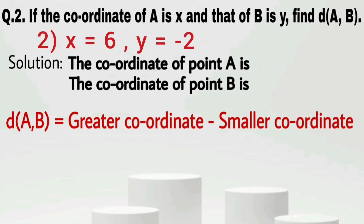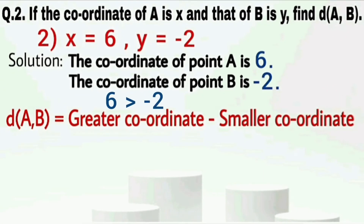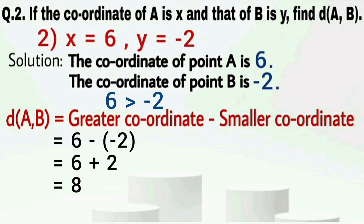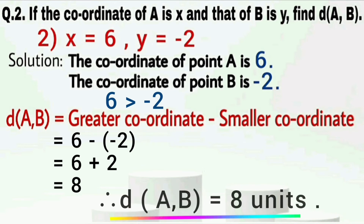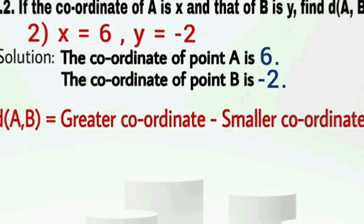The second case: X equals 6 and Y equals minus 2. The coordinate of point A is 6 and the coordinate of point B is minus 2. Since 6 is greater than minus 2, the distance between A and B equals 6 minus (minus 2). Minus minus becomes plus, so 6 plus 2 equals 8. Therefore the distance between point A and point B is 8 units.